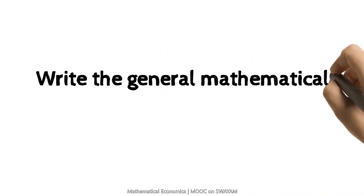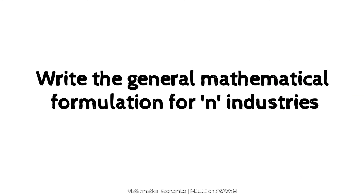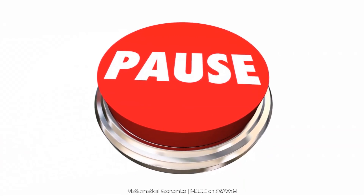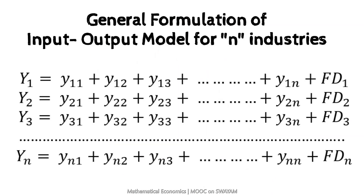Can you write the general mathematical formulation for N industries? You have just seen how the interdependence of industries in an economy has been expressed in a mathematical form. This is the beauty of mathematics — this is how mathematics makes the study of economics easy to understand and interpret.